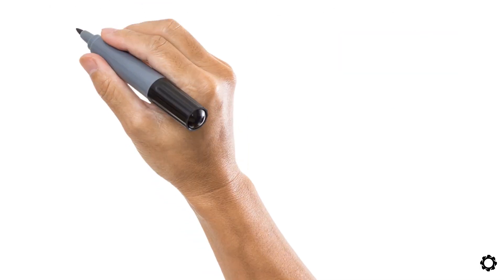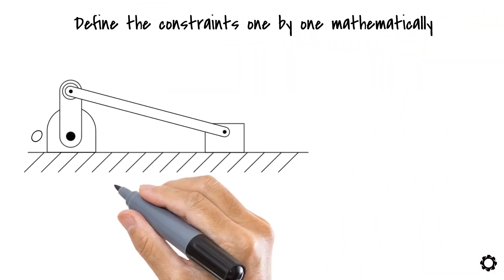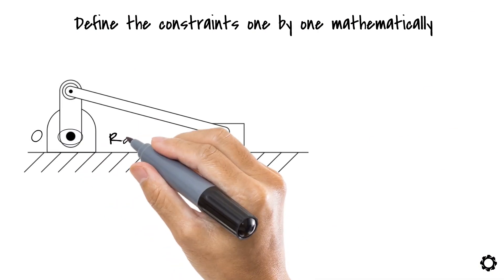Next, it's our turn to define the constraints one by one mathematically. Let's start with the ground crank constraint. We know it is a revolute joint which can be defined as follows.